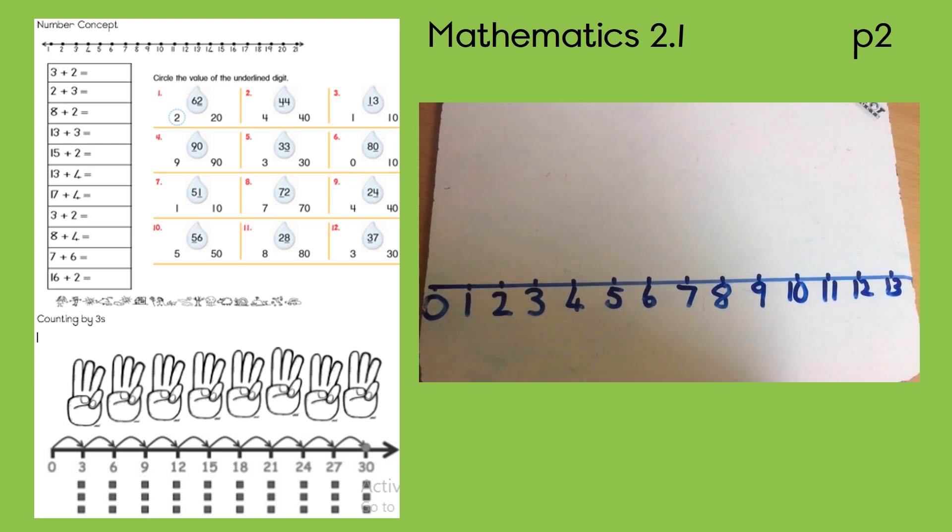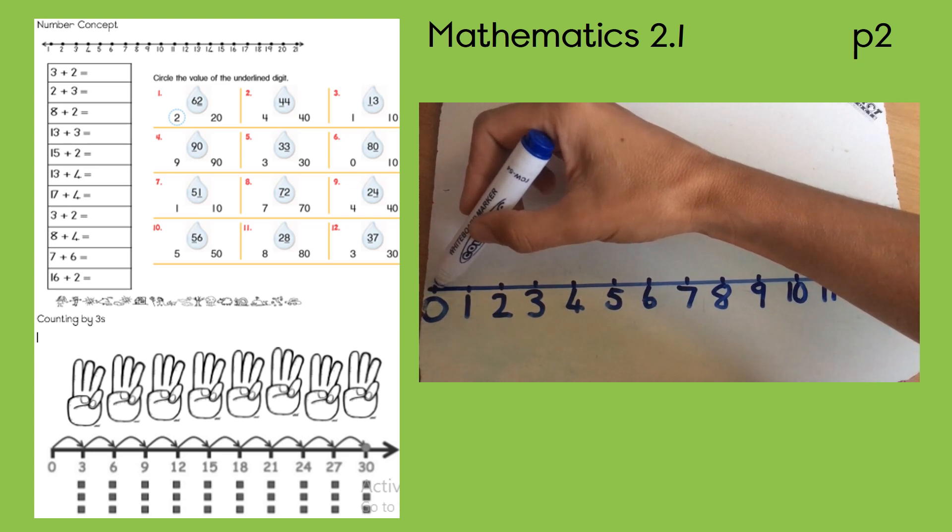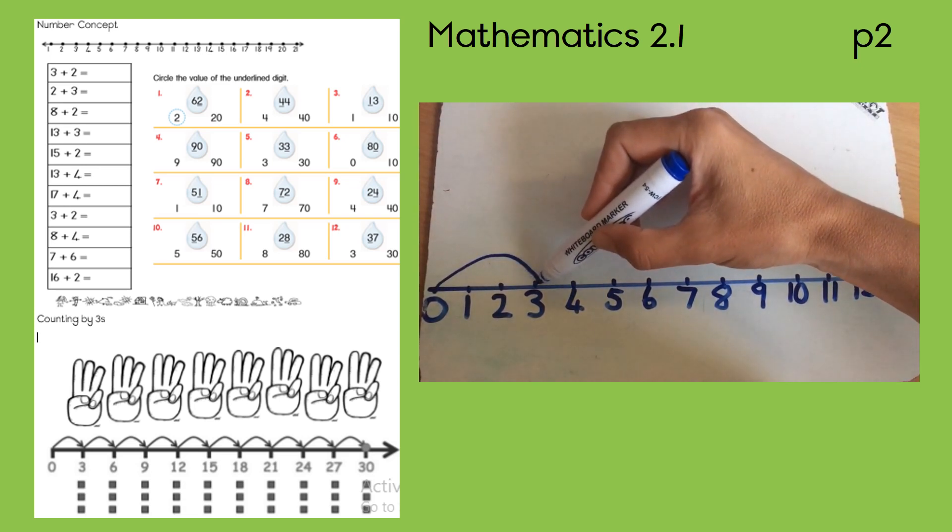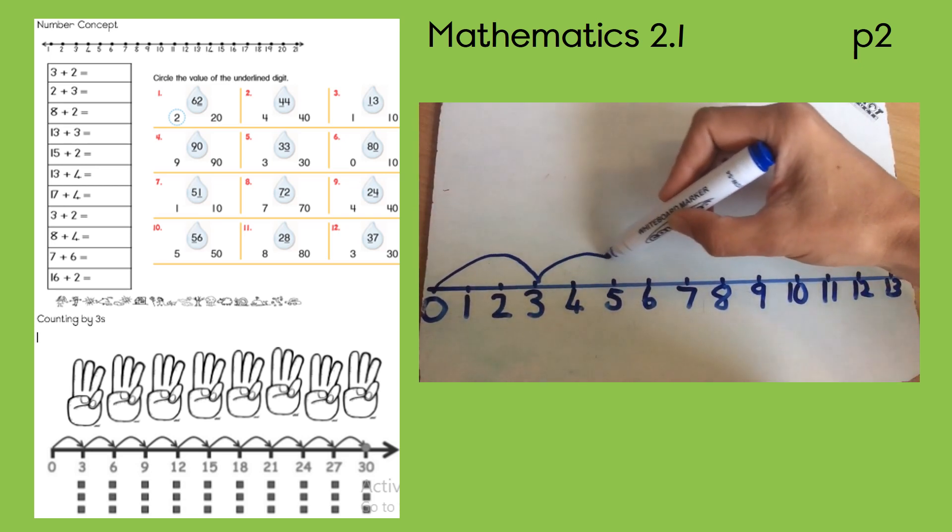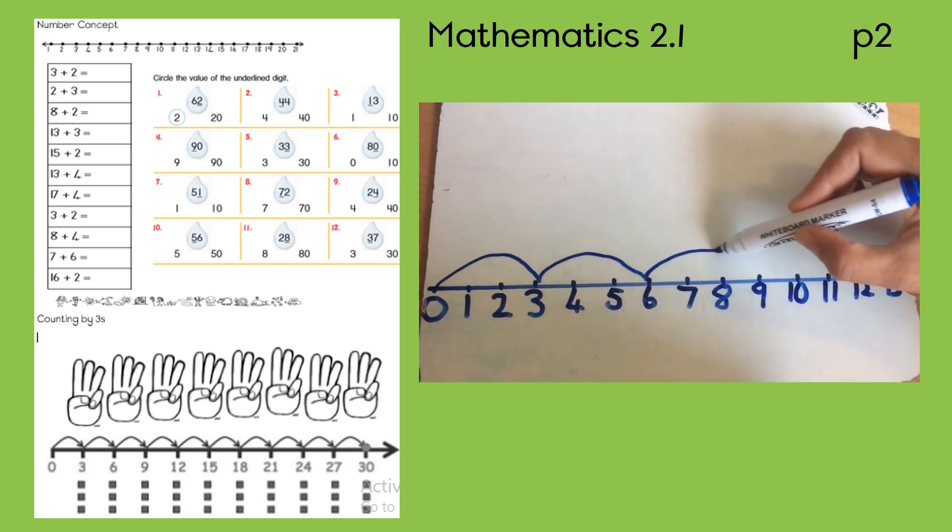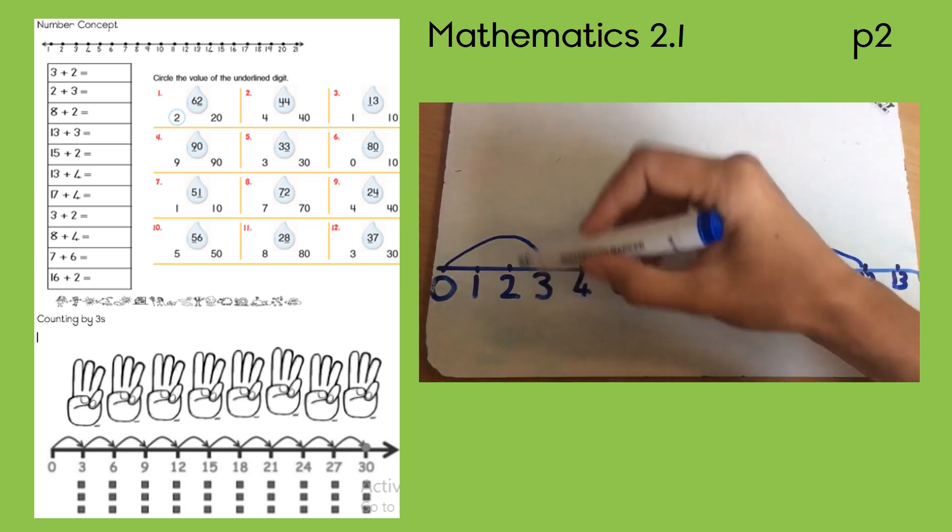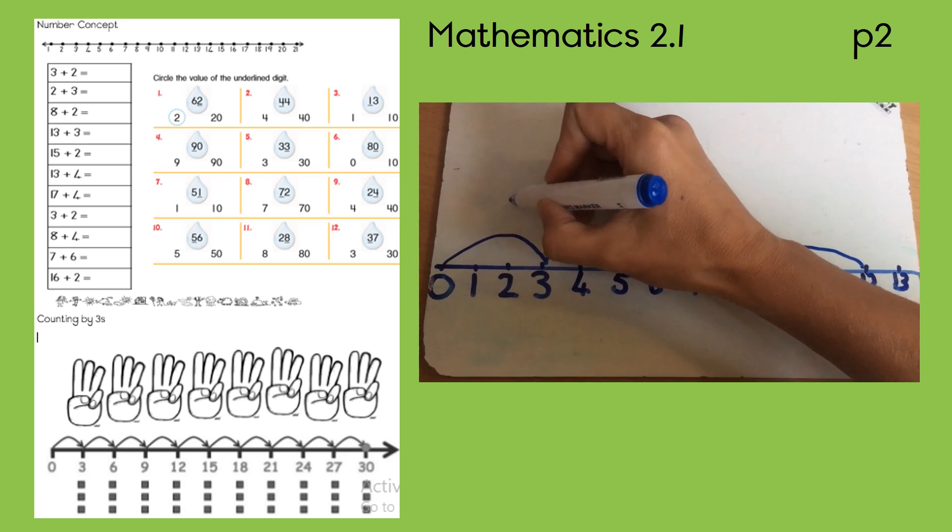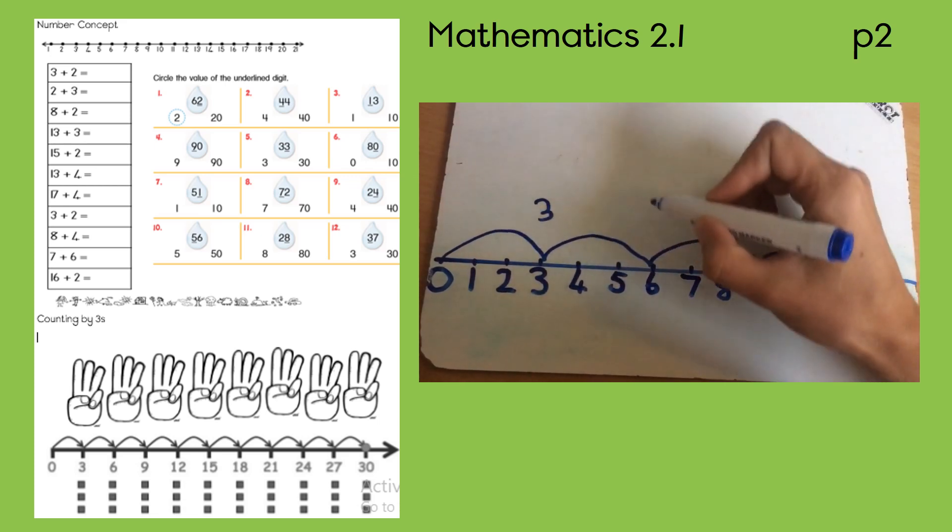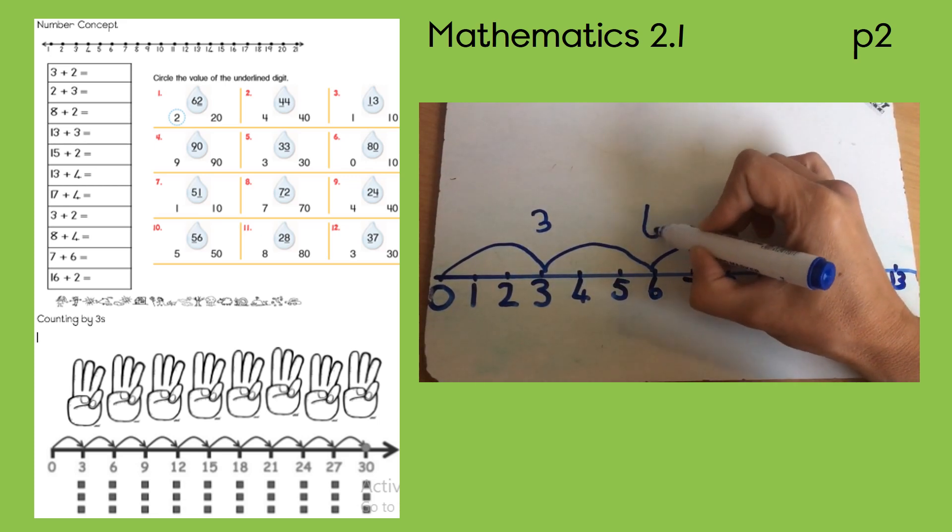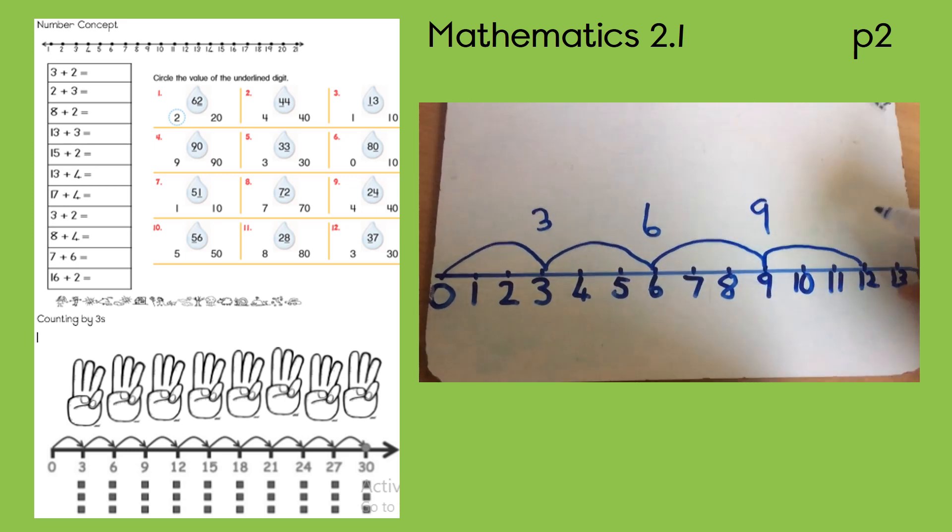When I count in threes, it means I count every third number only. So we always start at 0. So I'm going to skip 1 and 2, I'm going to land on 3. Skip 4 and 5, land on 6. I land on every third number only. So that means when I count in threes, I count 3, 6, 9, 12.